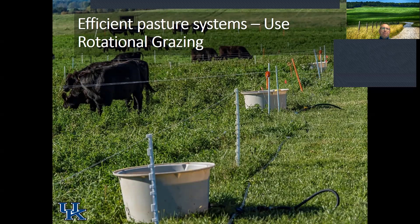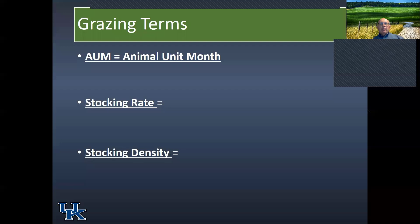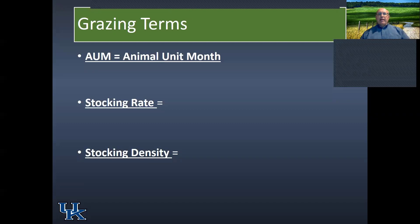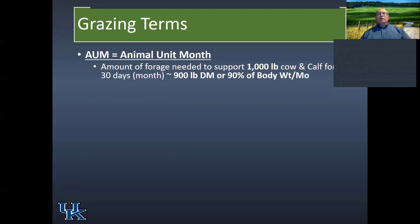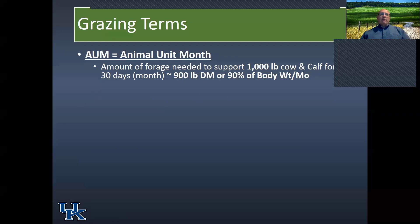To build an efficient pasture system utilizing rotational grazing, I want to define a few key terms we've encountered this semester: animal unit month (AUM), stocking rate, and stocking density. An animal unit month is the amount of forage needed to support a 1000-pound beef cow and her calf for 30 days — roughly 900 pounds of dry matter, or about 90% of her body weight.